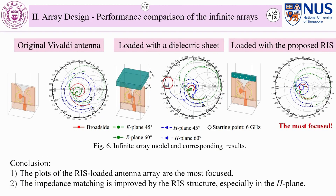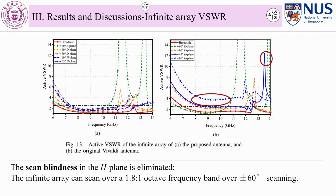The effects of the RIS layer can be seen from the S11 results of infinite arrays loaded without or with different superstrates. The plots of the RIS-loaded antenna array are the most focused, meaning that impedance matching is improved by the RIS structure effectively. Especially in the E-plane, the scan blindness present in the original Vivaldi array is eliminated.